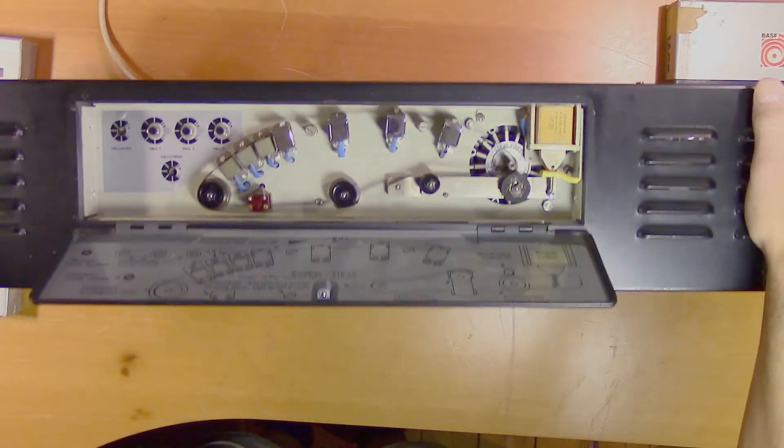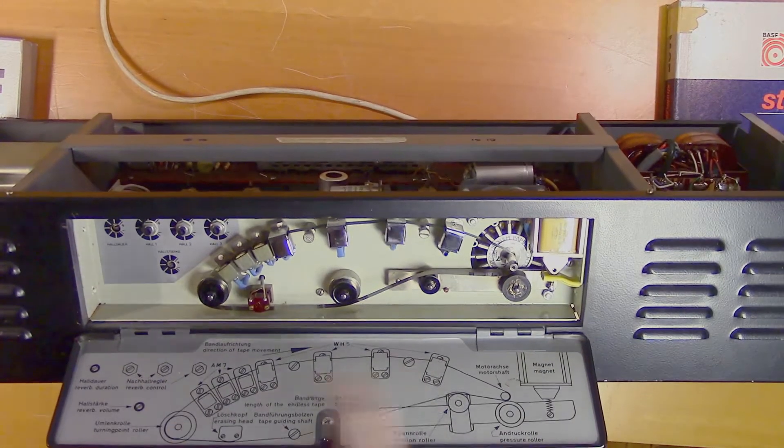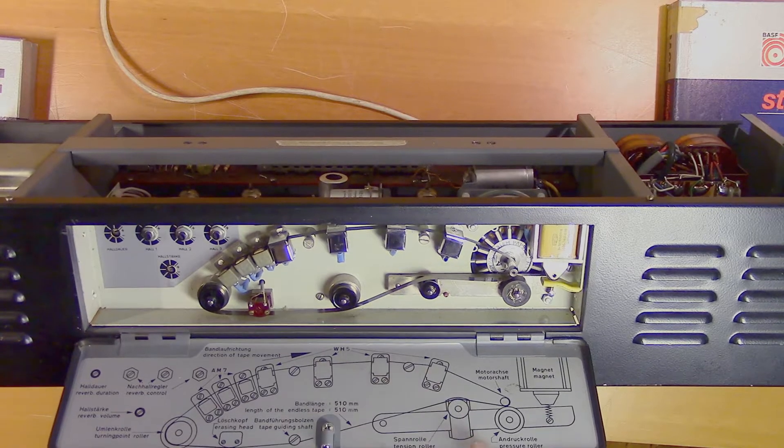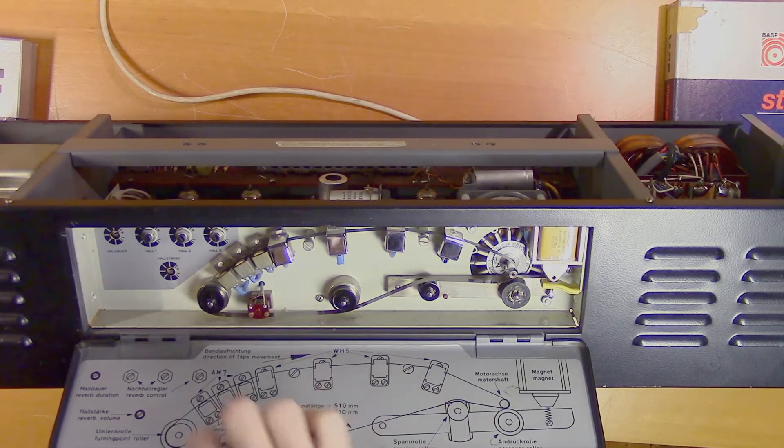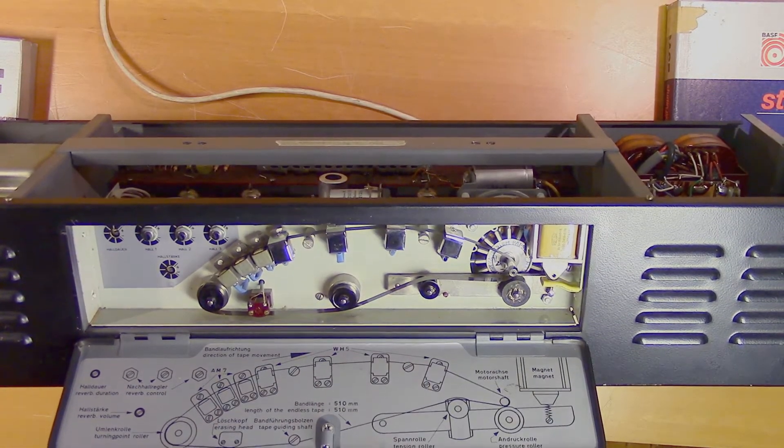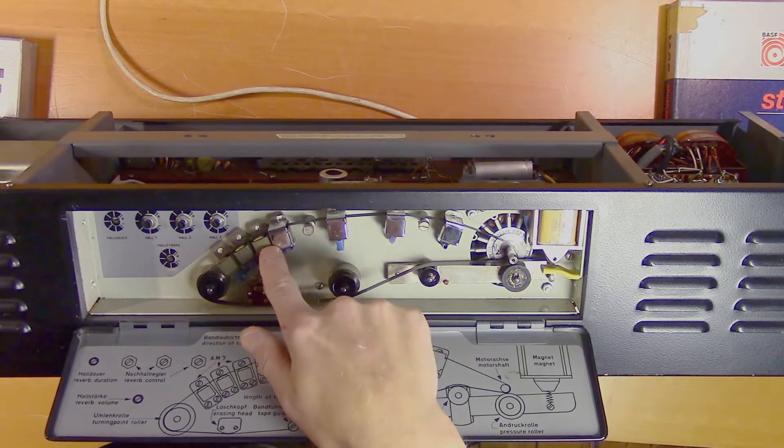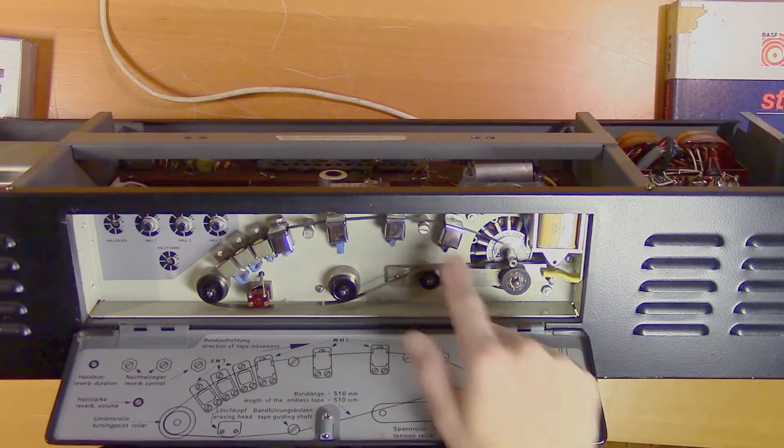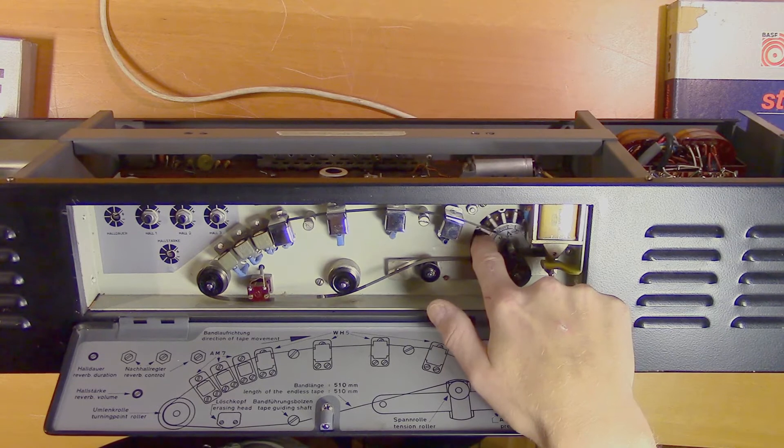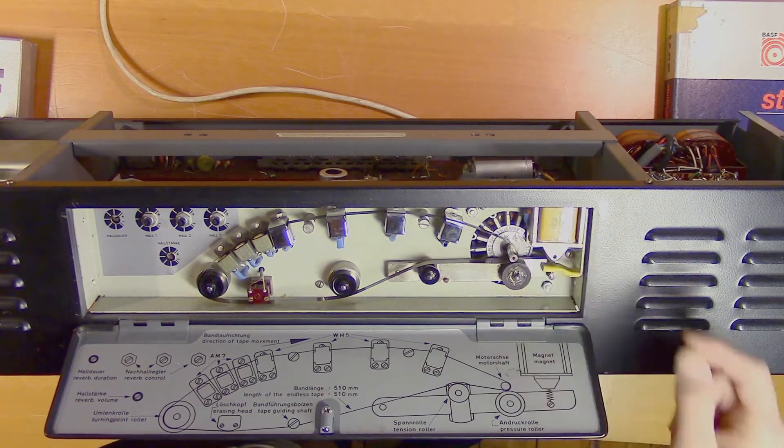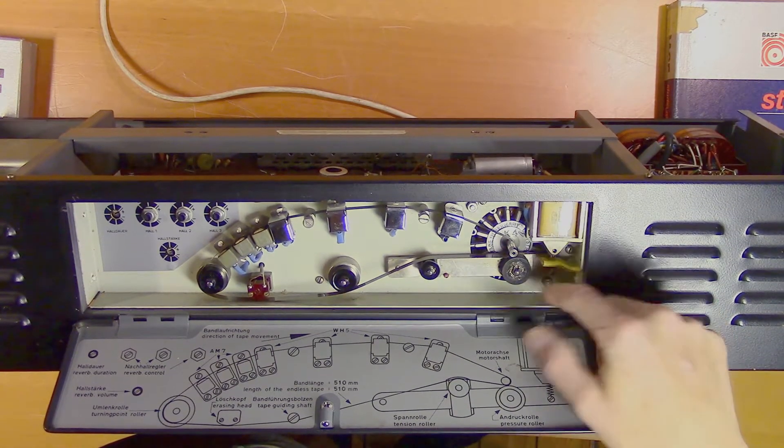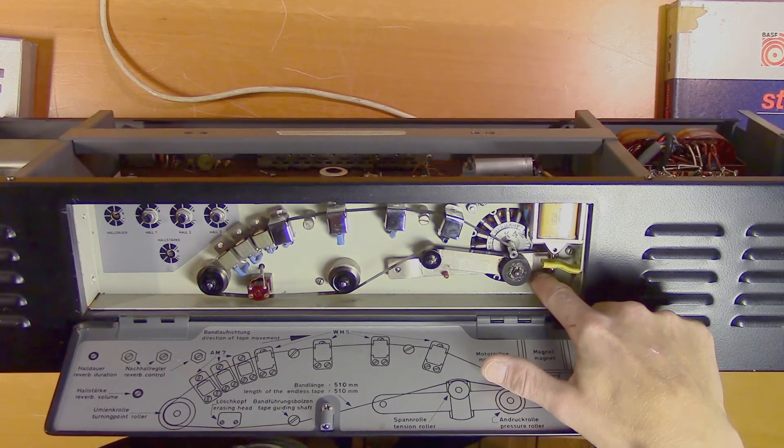And here you will see another very nice feature. We have a picture of the tape echo where all the components are labeled, and you can see how to thread it with new magnetic tape. And here we have the record heads, and here we have the playback heads. And here you can see the motor and the motor shaft, and here we have the electromagnet that engages the mechanism when you turn it on.